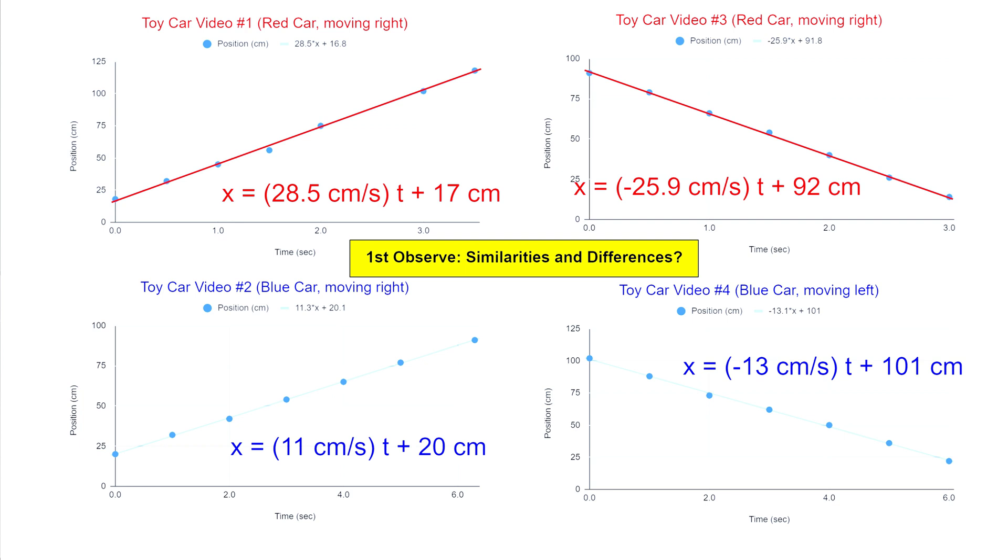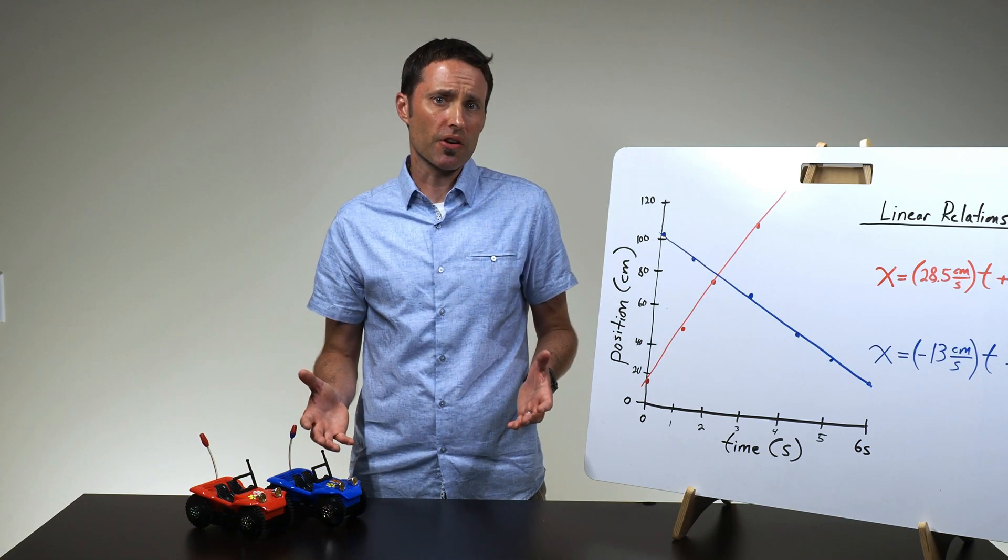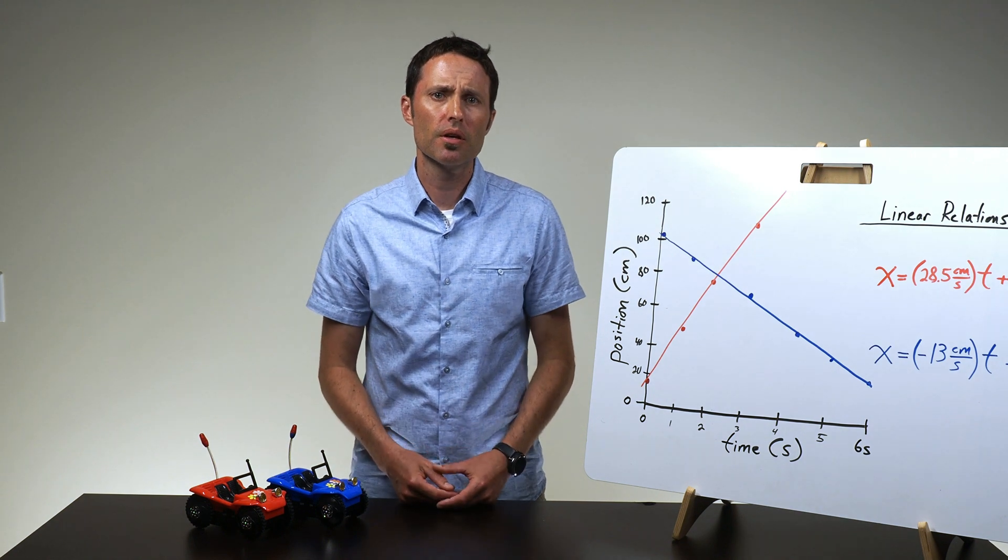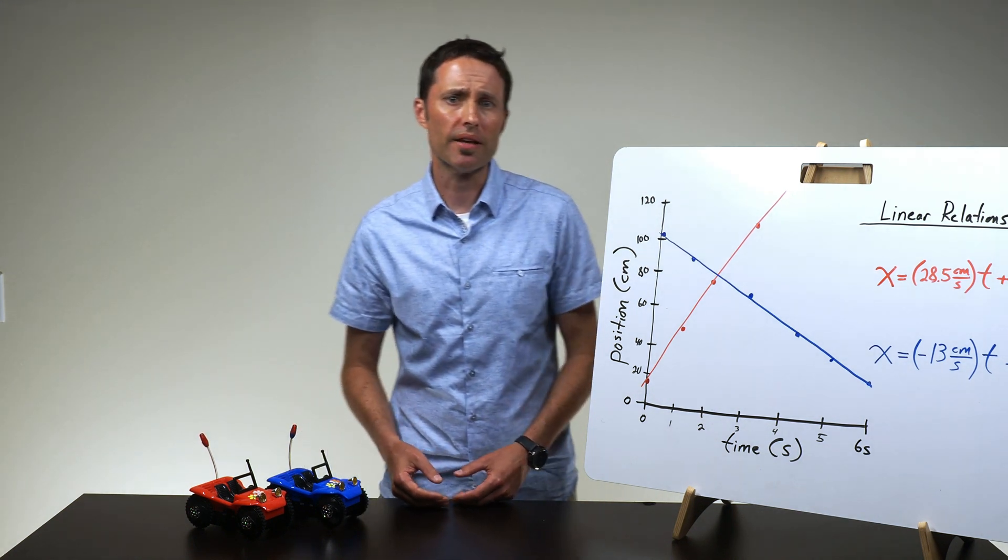If you give groups different speed cars, starting positions, and directions of motion, then the students will be able to identify similar graph shapes but different graph steepnesses or slope values, different y-intercept values, and some positive and negative slopes. Now you can ask what led to different slope and y-intercept values. Why were some slopes positive and other slopes negative?